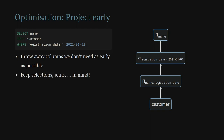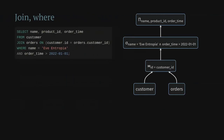We can't just project down to name right away though, because we still need the registration date to apply our selection. So selections, join conditions, and similar things are something you need to keep in mind with this optimization. Now let's look at a more complex query: SELECT name, product_id, order_time FROM customer JOIN orders ON customer.id = orders.customer_id, with a WHERE clause filtering where name equals Eventropia and order_time is greater than 1st of August 2021. The naive order is: tables, then join, then selection, then projection.